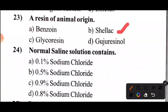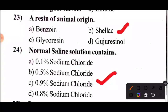Question 24: Normal saline solution contains what? Take 5 seconds. The answer to question 24: normal saline solution contains Option C — 0.9% sodium chloride.